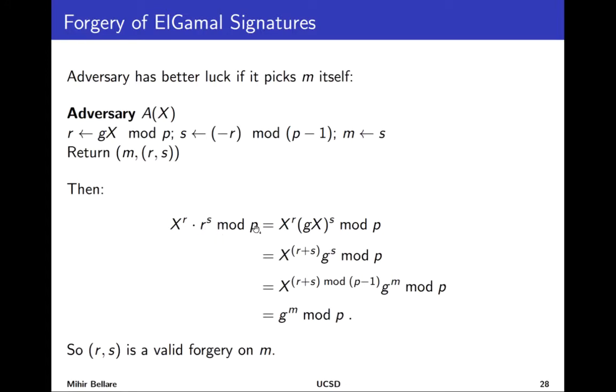So plug in all the quantities. r is g times X. So plug that in here. Then you get X^(r+s) times g^s. Now s is the same as m. So you can write that g^s is g^m. And remember that exponents here will be modular the group order. So you may as well put a mod p minus 1 here. It wouldn't make any difference whether you did or didn't. But you see that if s is negative r mod p minus 1 this is just 0. And so this just goes away, X^0 is 1 and you get g^m. So we have a valid forgery.